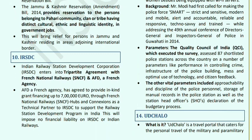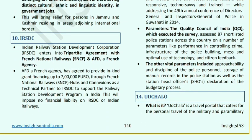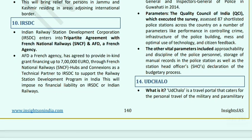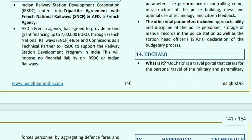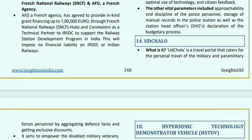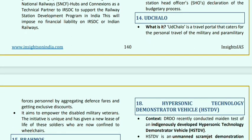IRSDC (Indian Railway Station Development Corporation) has entered a three-partite agreement with French National Railways and AFD (a French development agency), which agreed to provide a kind grant financing of 7 lakh euros through French National Railways' Hubs and Connections as a technical partner to IRSDC to support the railway station development program in India. No financial liability will come to IRSDC or Indian Railways.